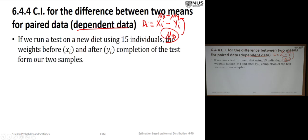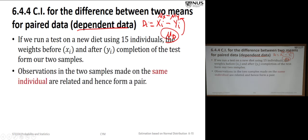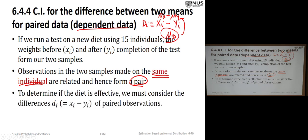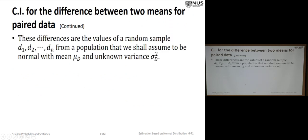If there's no effect from the diet program, we expect the expectation of this difference should be zero. The question is how to find a confidence interval for the expectation of this difference. Strictly speaking, you can treat this as the expectation of x minus the expectation of y. But this is a special type — it's not just two different populations. Here, we have only one population: the population of the differences.